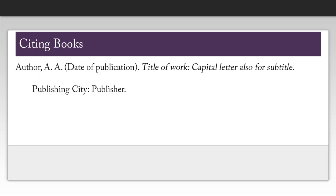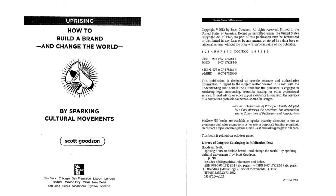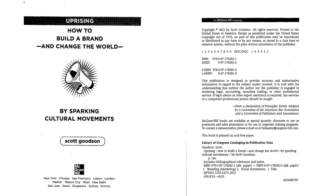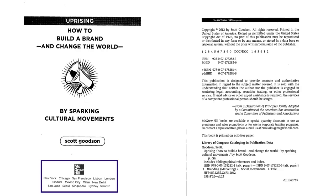Most of this information can be found on the title page. Let's take a look at the title page of a book by Scott Goodson. The book is called Uprising: How to Build a Brand and Change the World by Sparking Cultural Movements. Just under that is the name of the author — sometimes you'll have more than one. And then at the bottom of the page, you'll usually find the publisher, in this case McGraw-Hill.